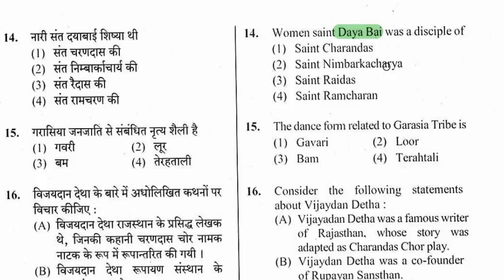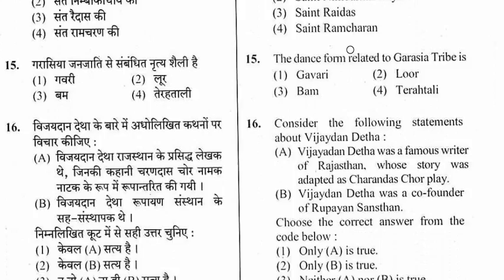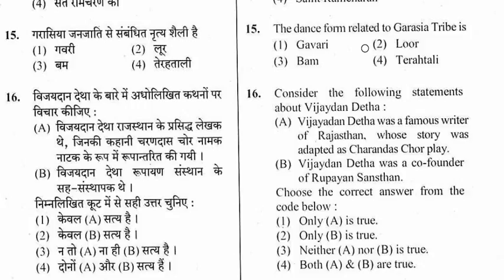Question 15: The dance form related to the Grasia tribe. Options are Gavri, Lur, Bam, and Tera Tali. The right option is the second one — Lur. The dance related to the Grasia tribe is Lur.